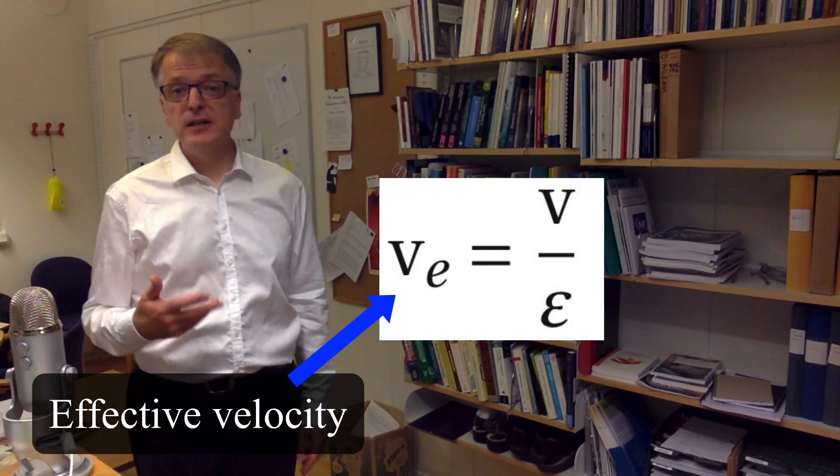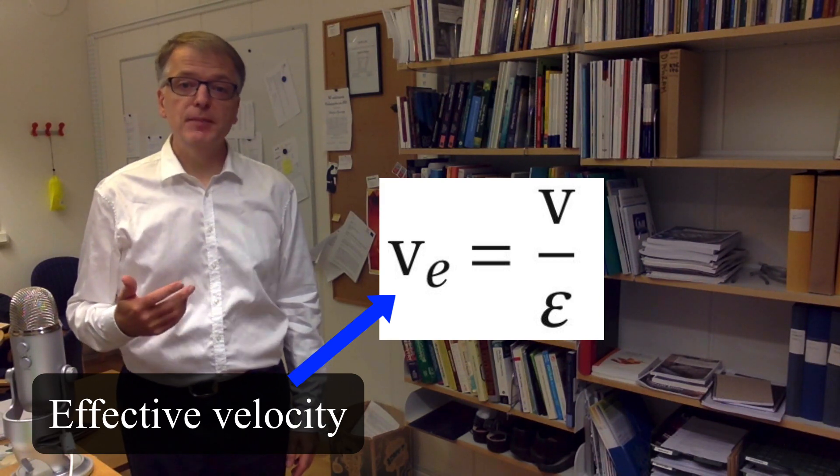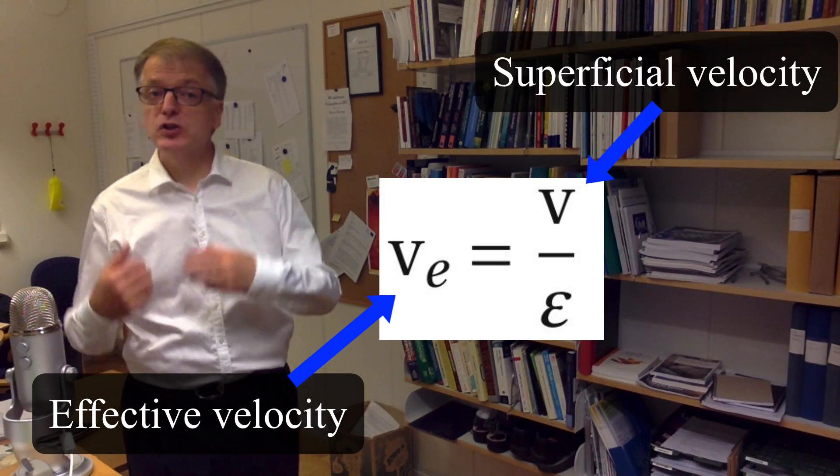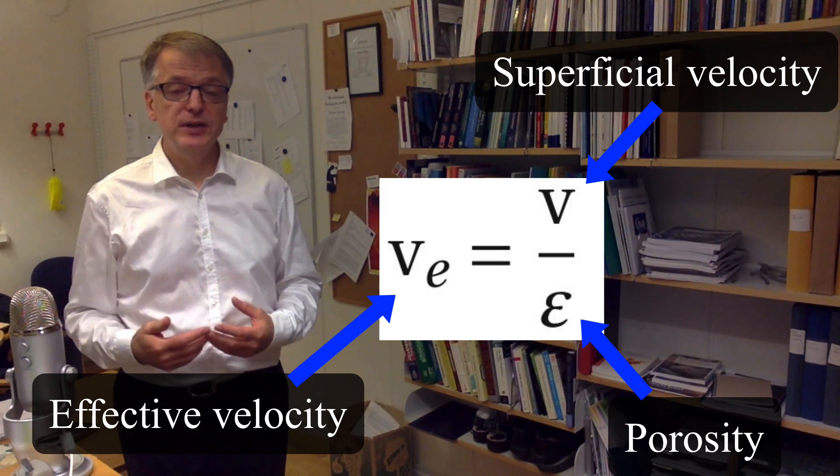In many textbooks on flow and porous media, be they about filtration, chromatography, absorption columns, membrane filtration or something else, it is stated that the effective velocity in the flow channels can be calculated by dividing the superficial velocity with the porosity of the material.